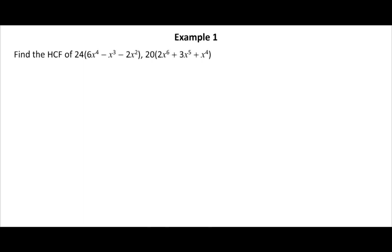Here is an example: find the HCF of 24 times (6x to the power 4 minus x cubed minus 2x squared) and 20 times (2x to the power 6 plus 3x to the power 5 plus x to the power 4). Click the solution button to view the solution.